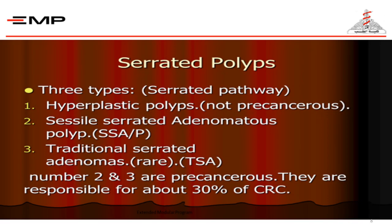Regarding serrated polyps, recently discovered, there are three types. Most are benign hyperplastic polyps that are not precancerous. However, sessile serrated adenomatous polyps and traditional serrated adenomas are precancerous and are responsible for about a third of cases of colorectal carcinoma.